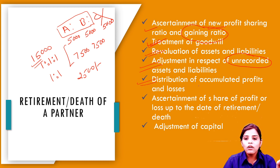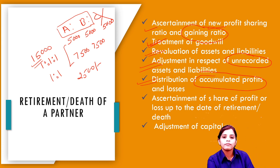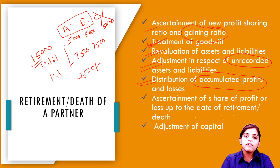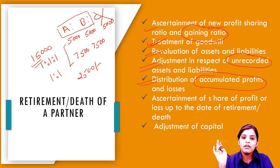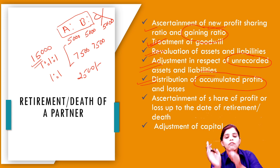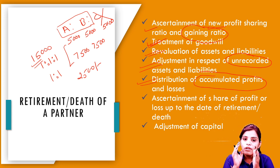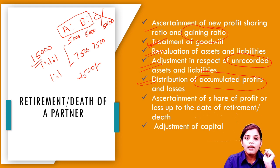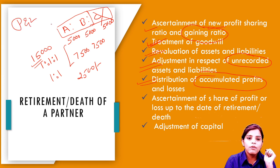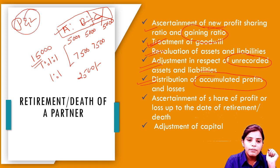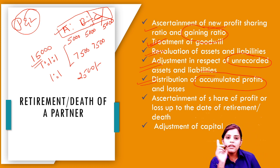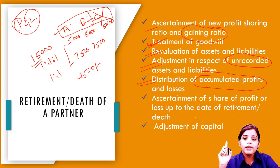Distribution of accumulated profit and loss — संचाई किये हुए लाभ, यानि जो हमारे reserves पड़े हैं — चाहे वो profit and loss हो, general reserve हो, या कोई भी reserve हो — ये सब part of profit होते हैं और इन पर सभी partners का right होता है। Example: A, B और C तीनों का उस reserve पर right है। जब C जाएगा, तो अपने हिस्से का P&L भी लेके जाएगा। ऐसे time पर जितने भी reserves हैं वो सारे old partners में old ratio में distribute करने होंगे।